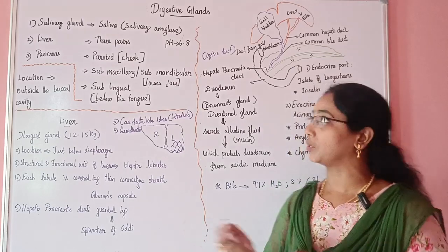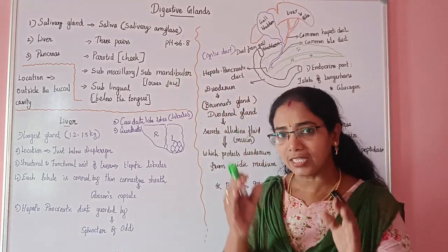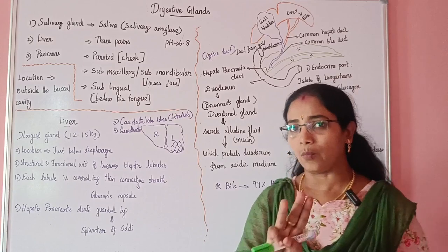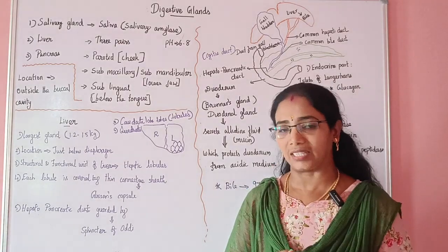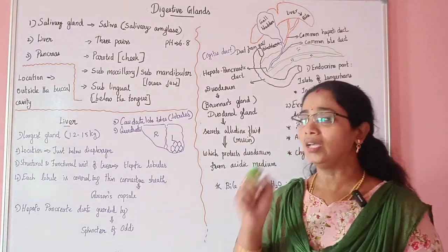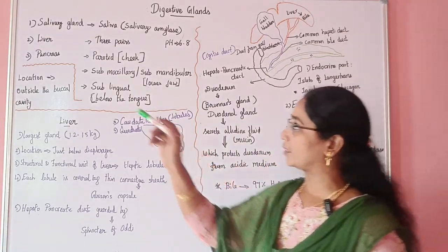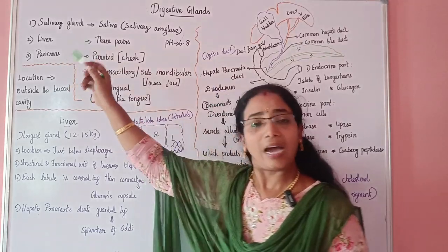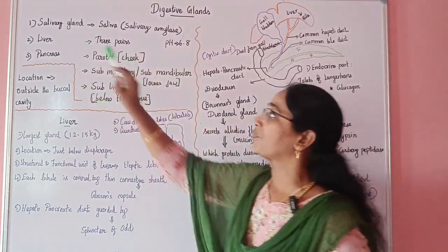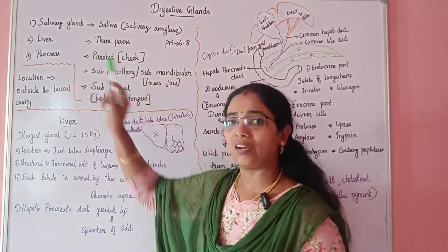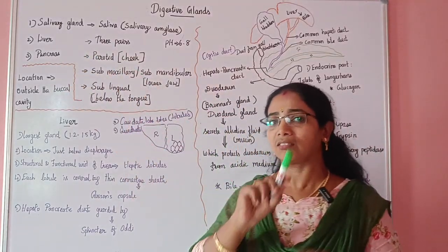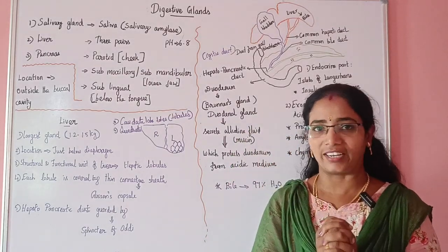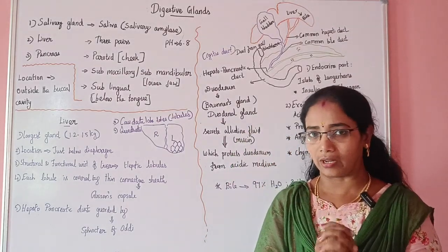We are going to talk about the digestive system and three important glands. The first gland is the salivary gland, the second is the liver, and the third is the pancreas.